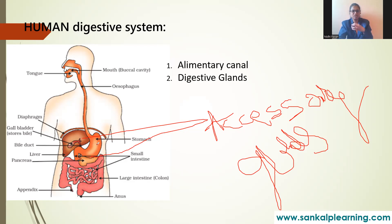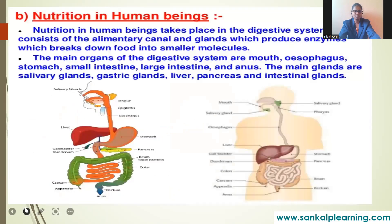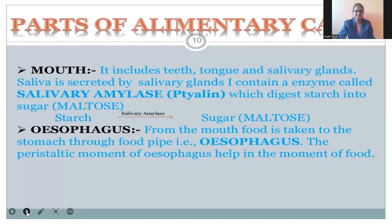The digestive system in humans starts from the mouth and ends with the anus, with two separate openings. That is why the human digestive system is called a complete digestive system. Now let us see how the process of digestion occurs, going part by part.